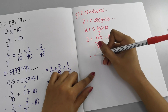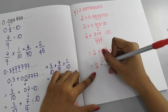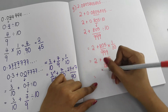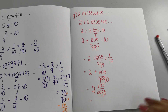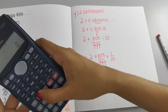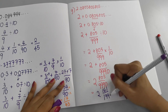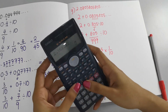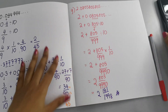So we get 2 + 805/9990. Simplifying 805/9990: divide both by 5 to get 161/1998. The final answer is 2 and 161/1998. Checking in the calculator: 2 + 161/1998 gives approximately 2.080580..., which confirms the answer.